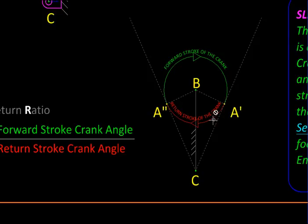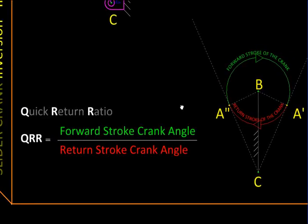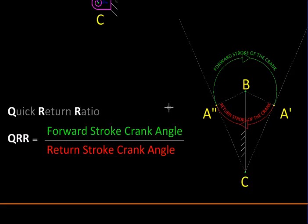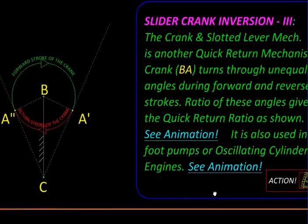Because this will be usually connected to an electric motor, these angles directly translate into time because electric motors rotate uniformly. The ratio of these two angles, the forward and the return stroke angle, will give us the quick return ratio. Let us follow the links over here to see this mechanism in 3D and in action.